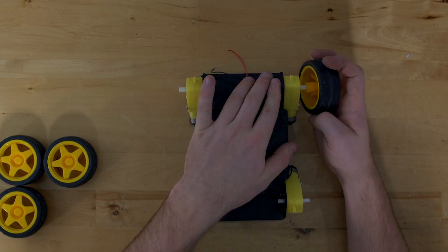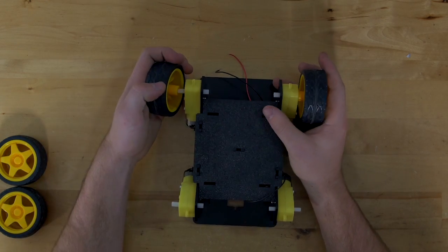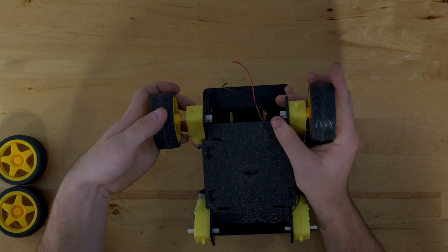After you have that together, simply slide your wheels onto the output shaft of each motor.